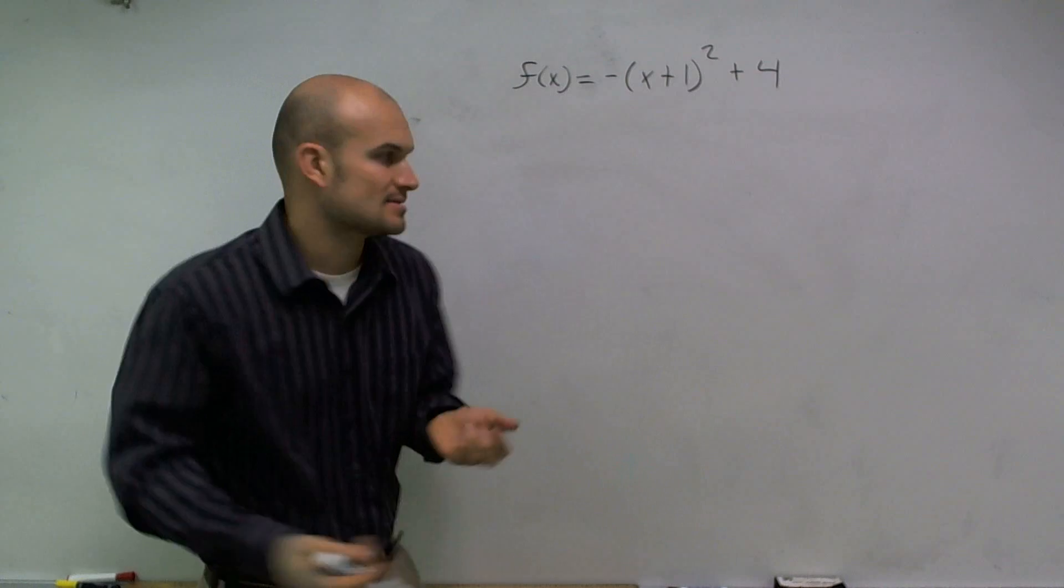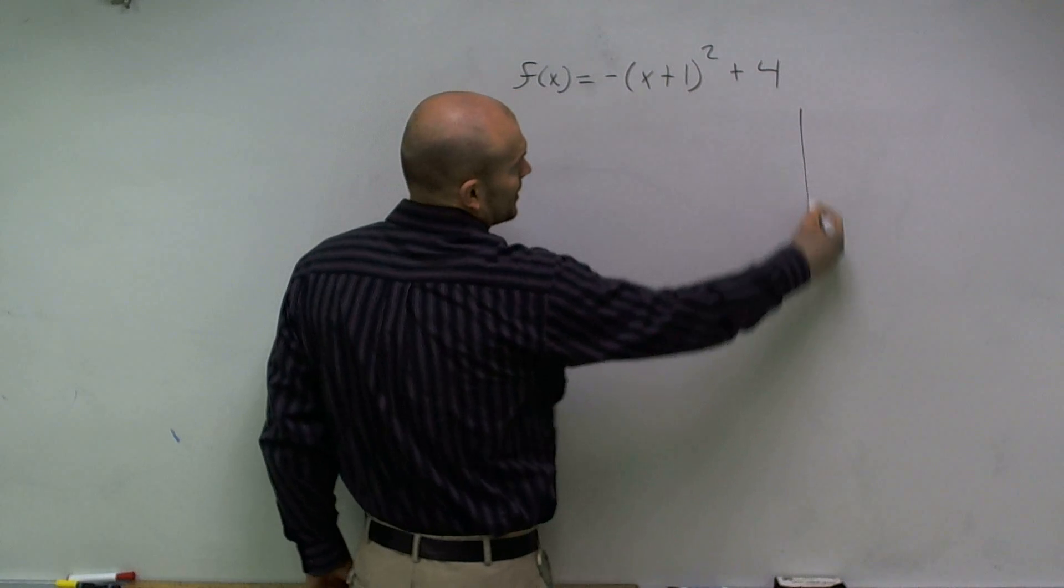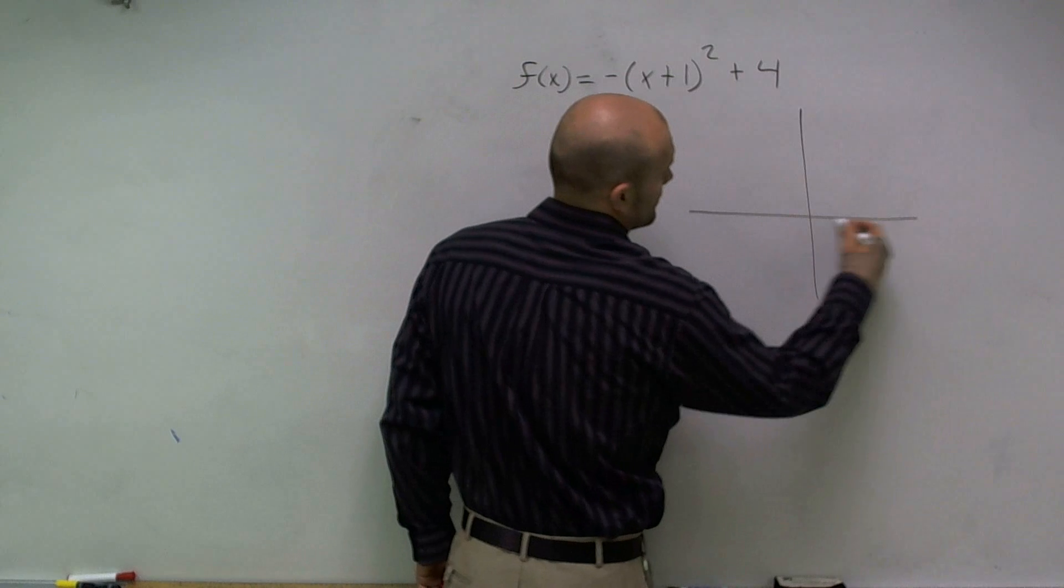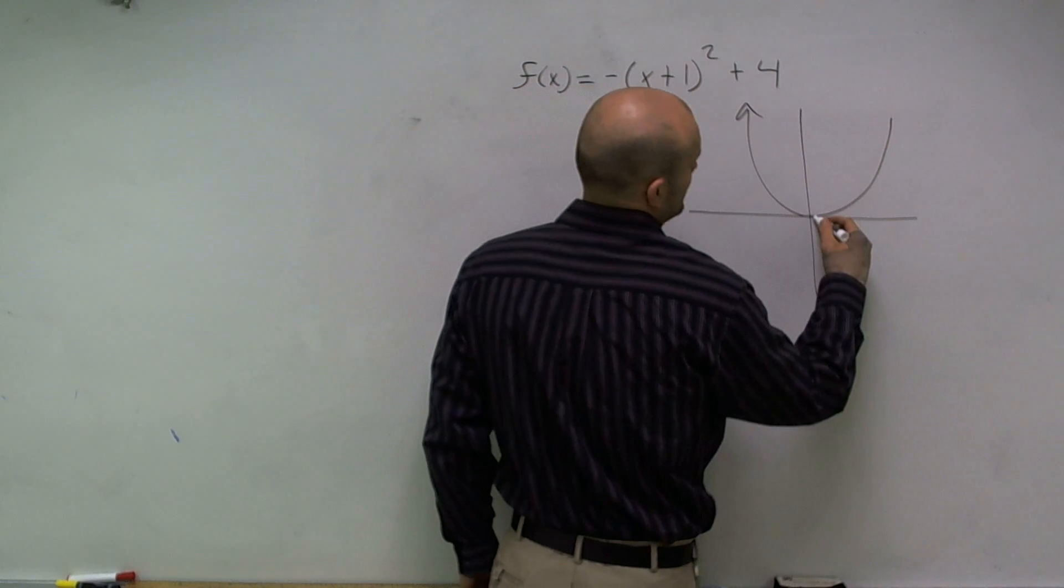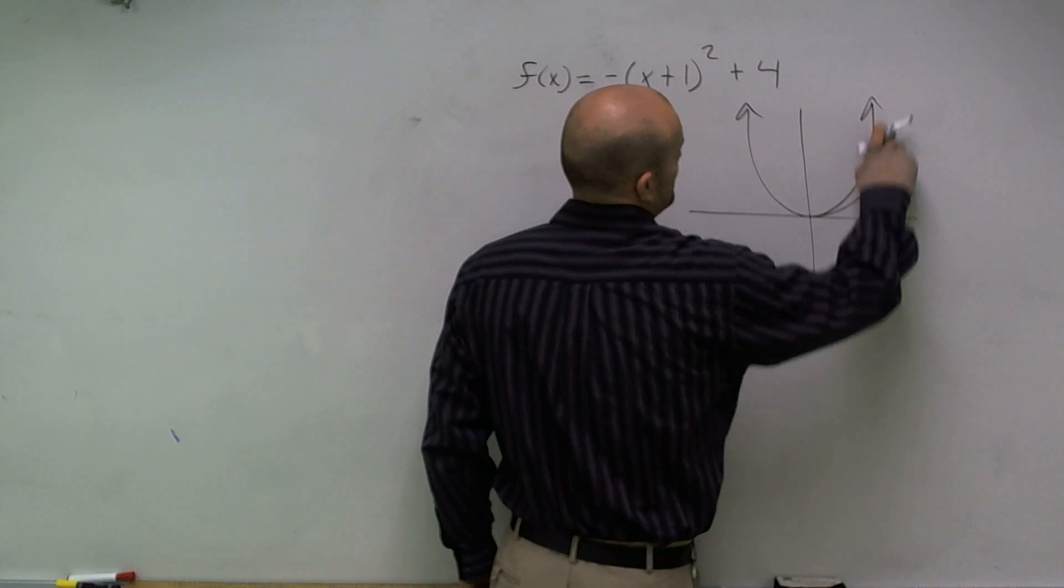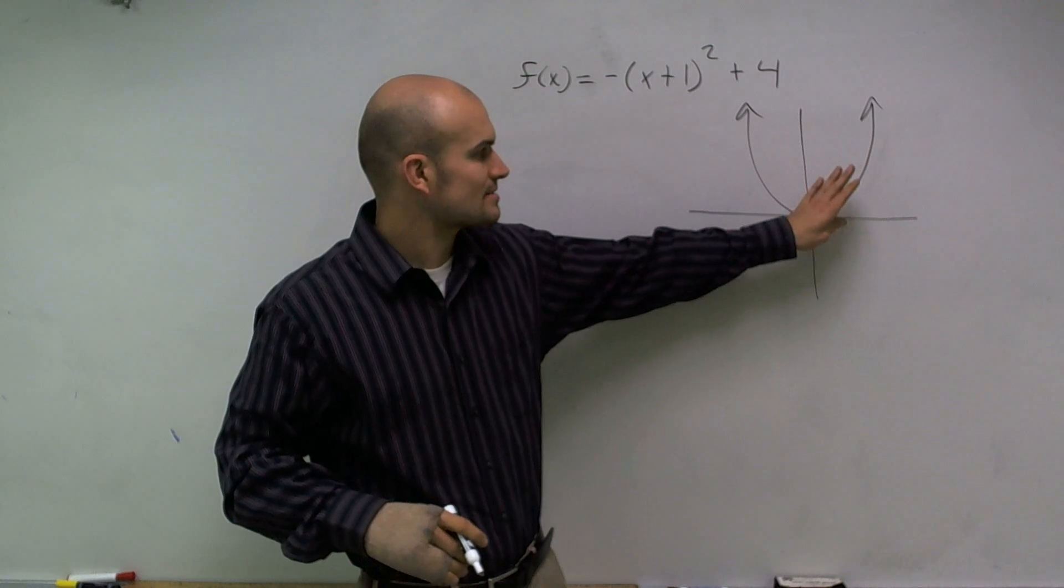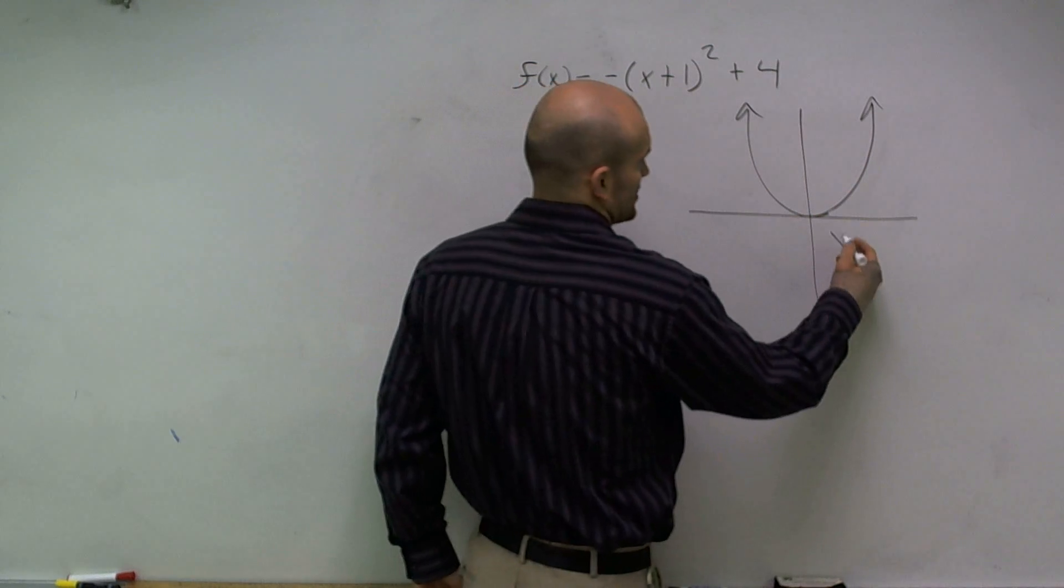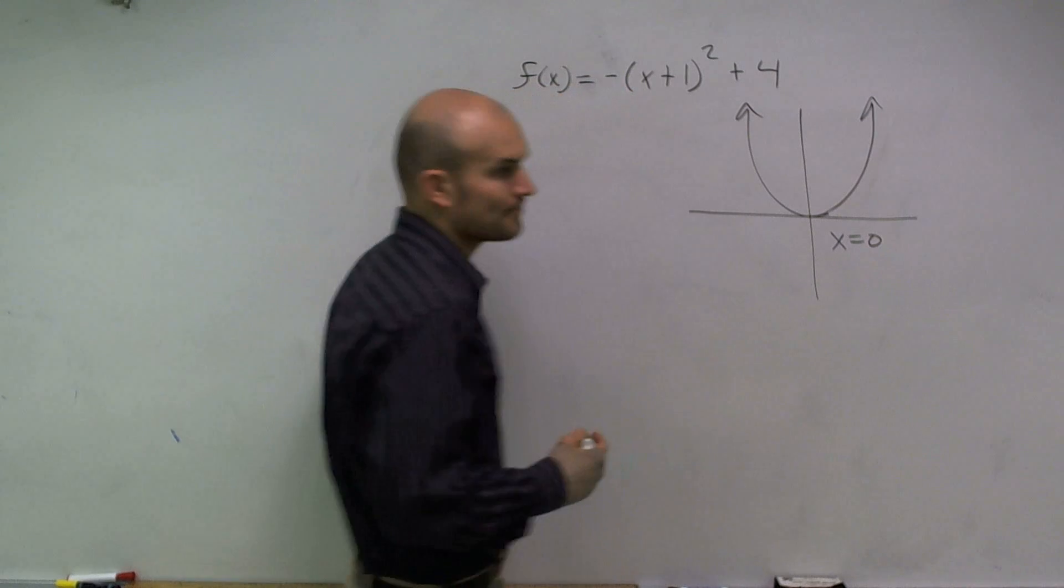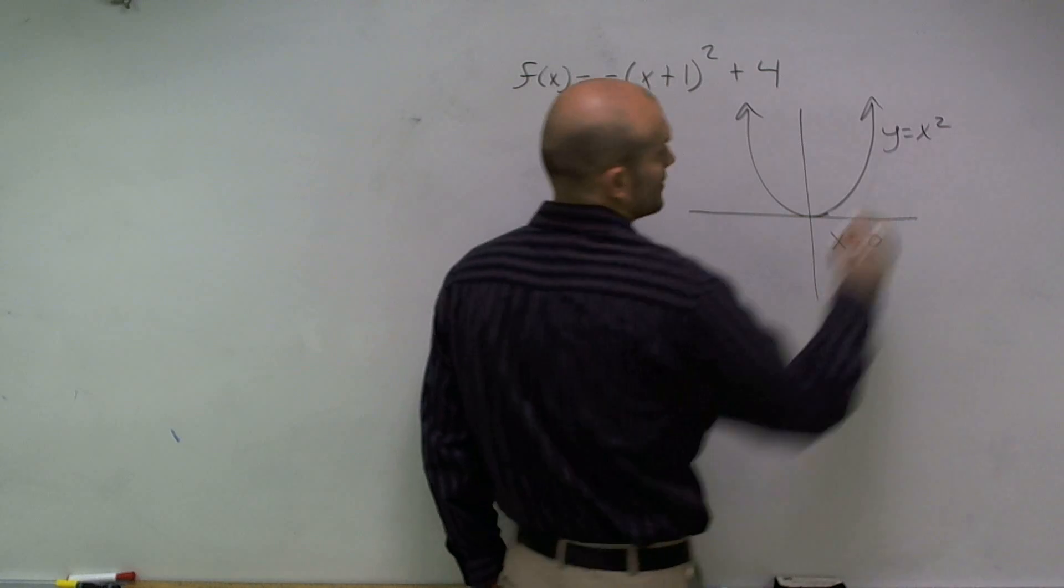So remember the axis of symmetry. If you remember a parabola, my parabola without any transformations is reflexive about my y-axis. All right, so this is my axis of symmetry. And in this case, my axis of symmetry is when x is equal to 0. All right, and this is for the parent function y equals x squared.